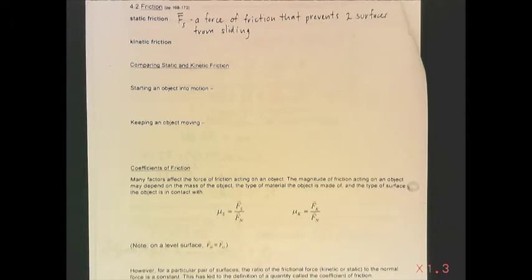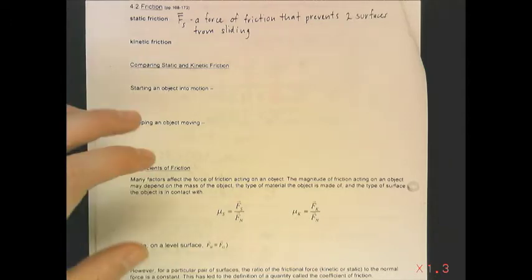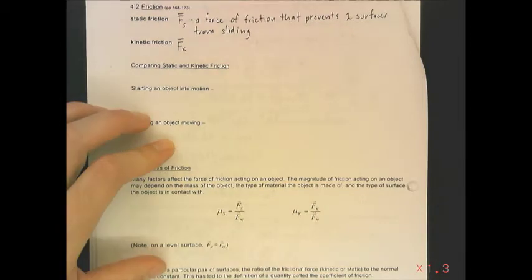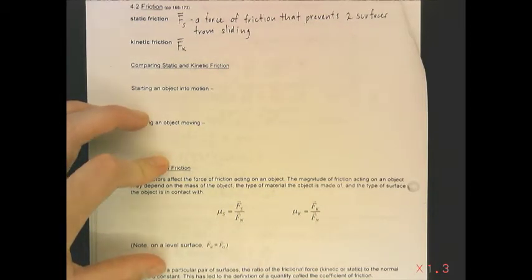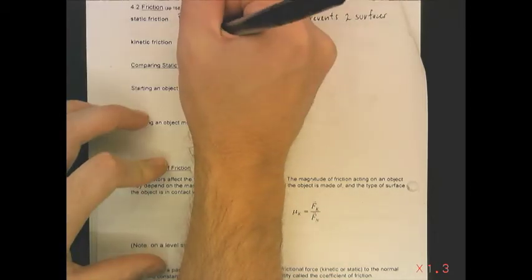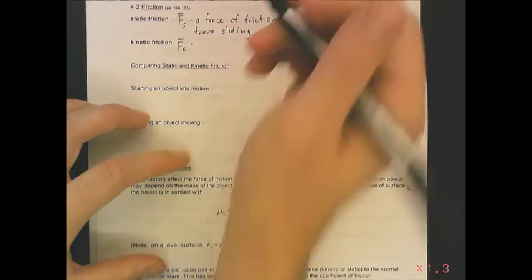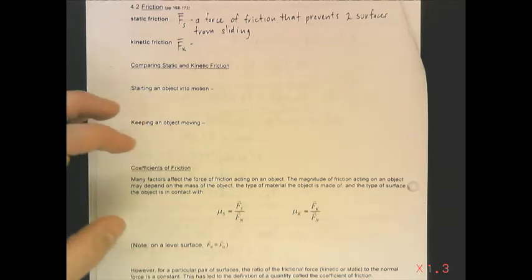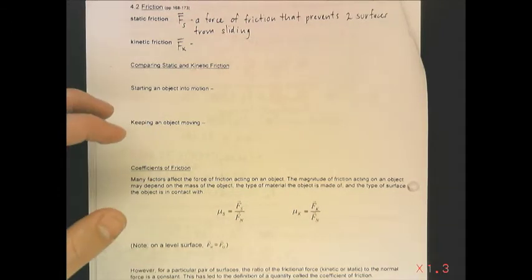Kinetic friction is given the symbol F with a subscript K. The subscript K comes from the Greek word 'Kinema,' meaning motion. This is the force of friction exerted on a moving object by a surface, opposite to the direction of the motion.